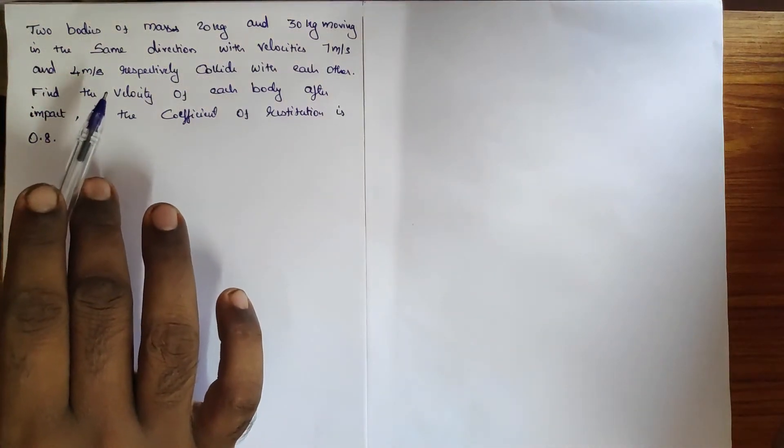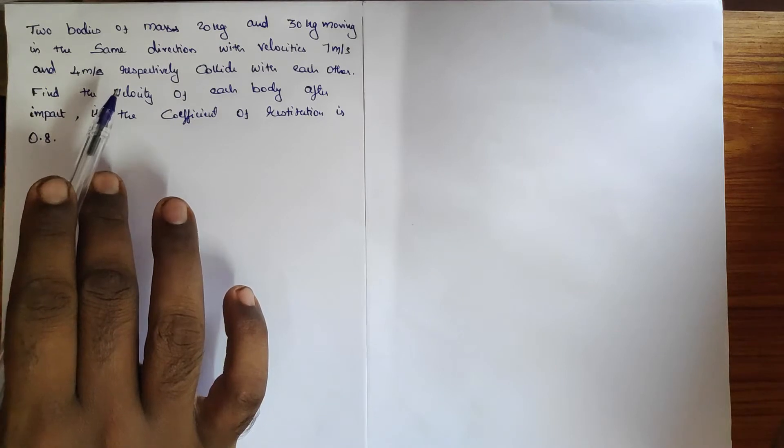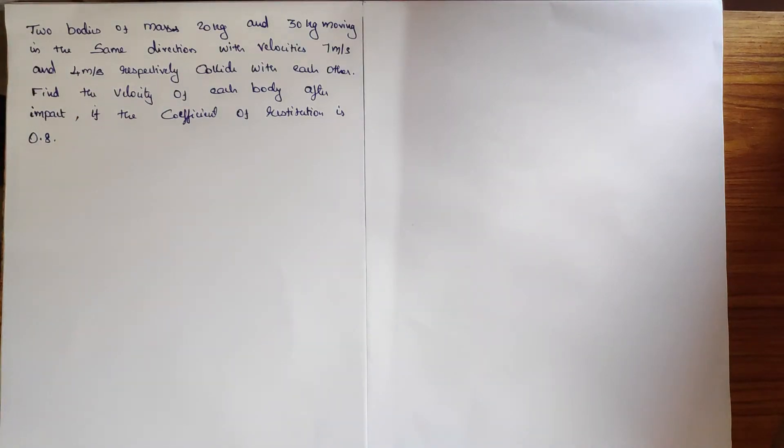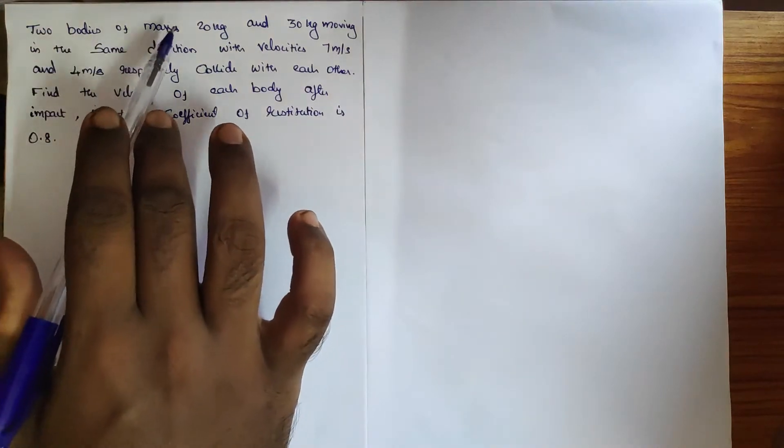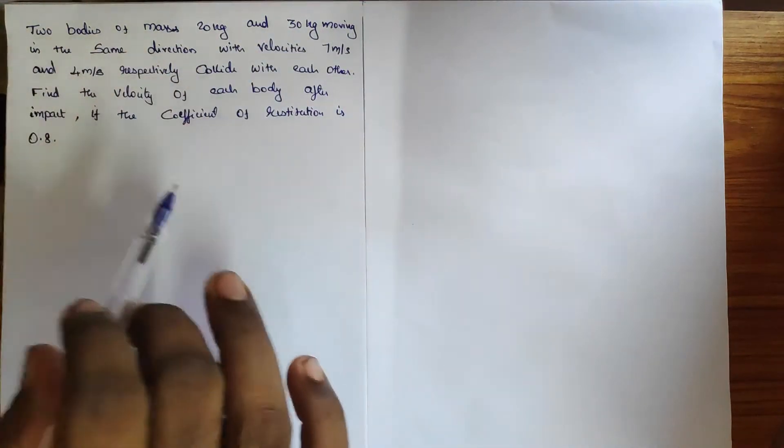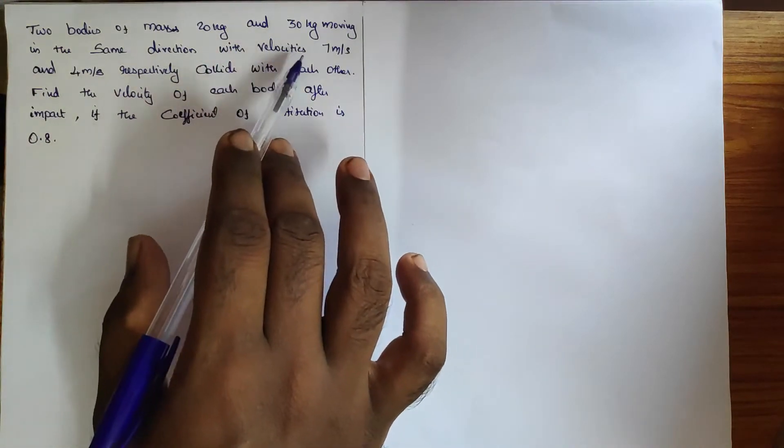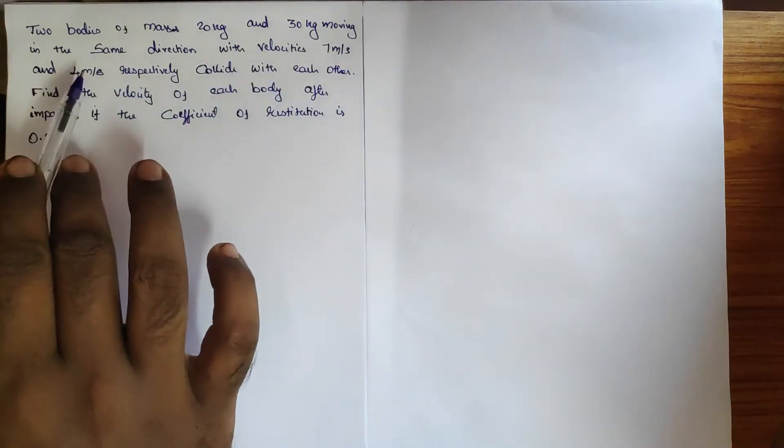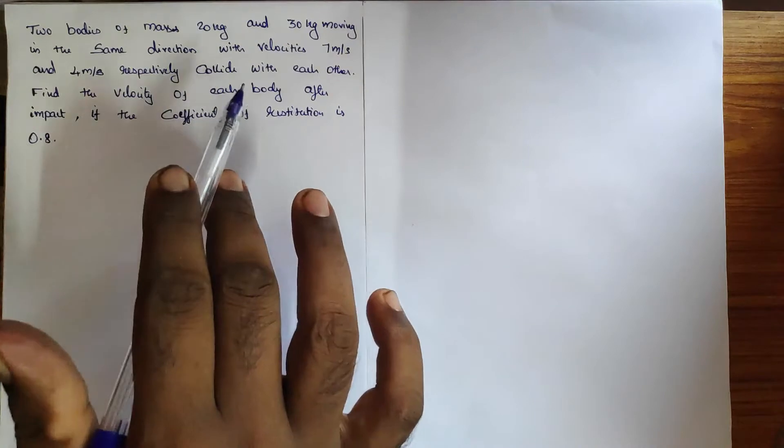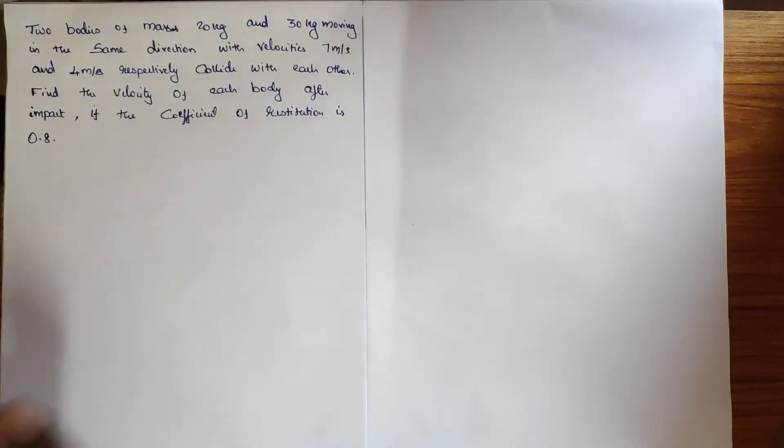Welcome students. I have a question from impact of elastic bodies, a direct impact question. Two bodies of masses 20 kg and 30 kg moving in the same direction with velocities 7 meter per second and 4 meter per second respectively collide with each other. Find the velocity of each body after impact if the coefficient of restitution is 0.8.